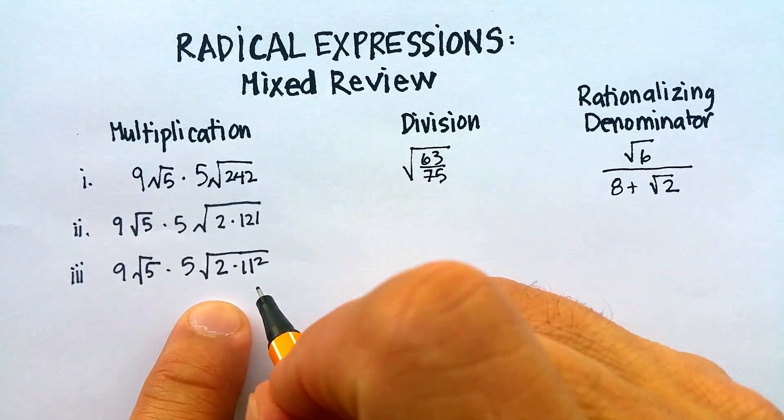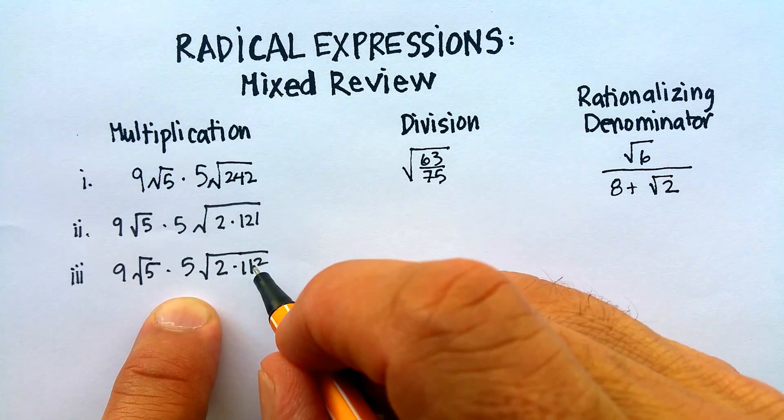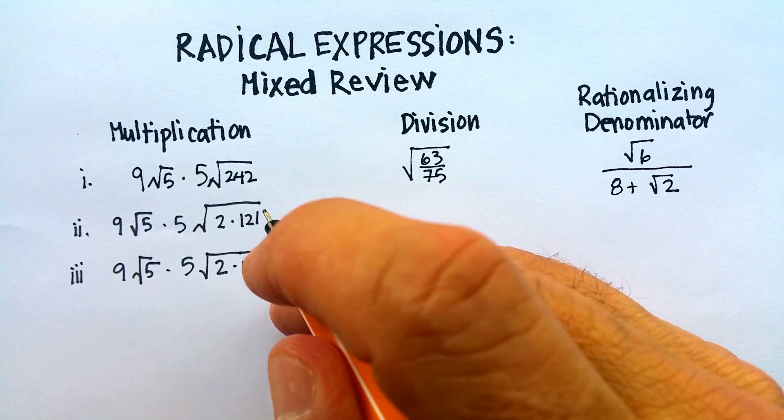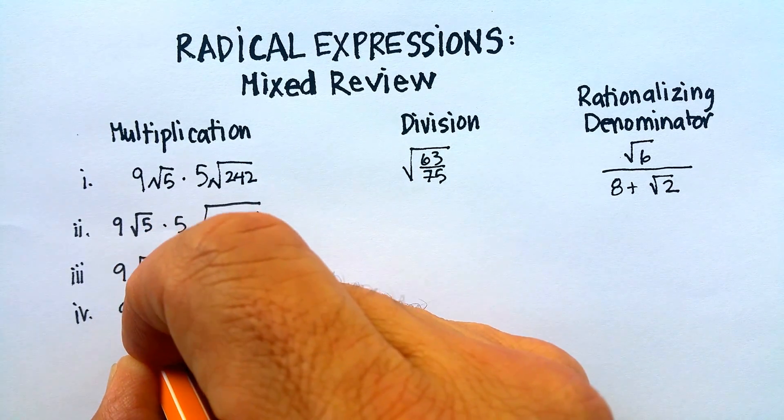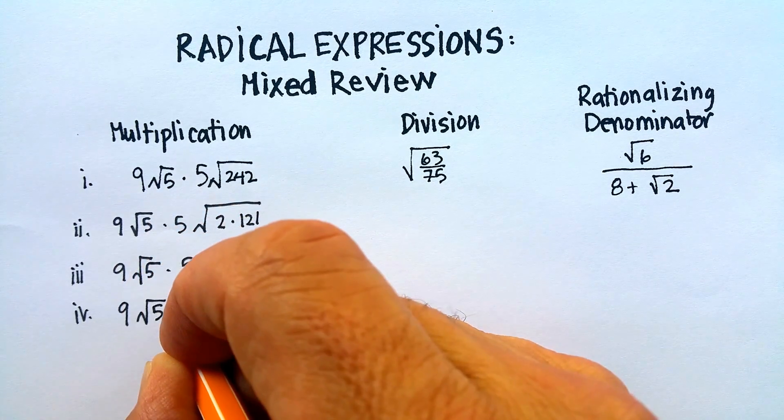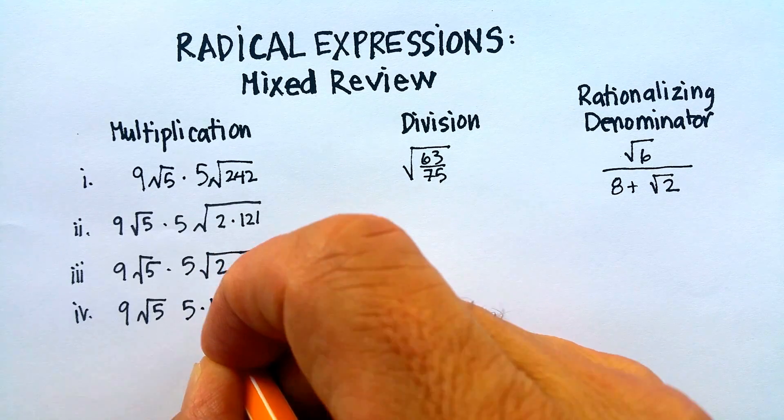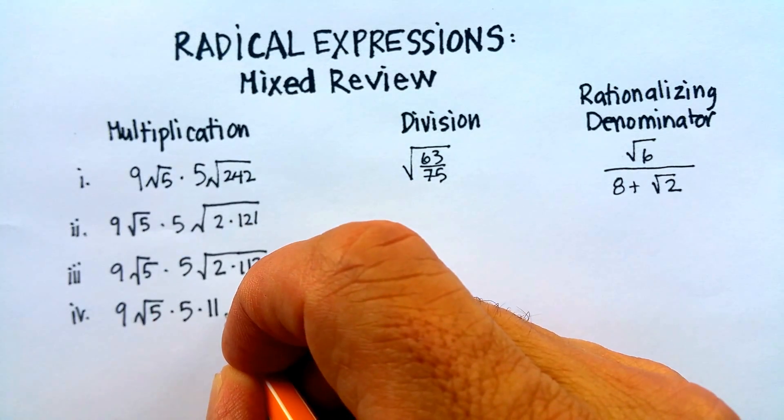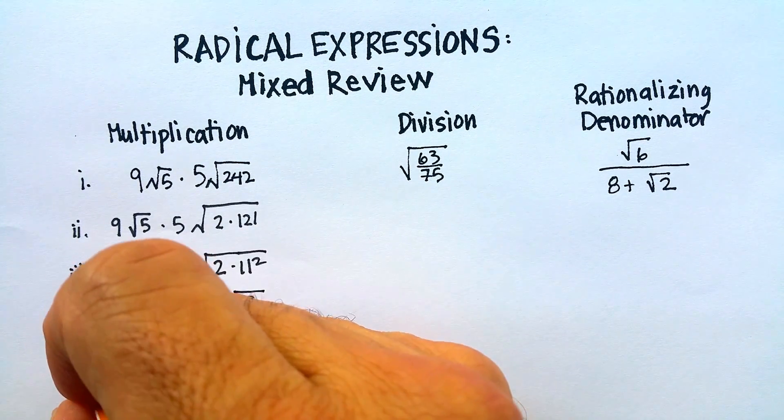Now, the reason that's important is because the square root of 11 squared is 11. So that means now I can take the 11 and put it on the outside. So let me just do that. So 9 radical 5, and then here I've got 5 times 11 times radical 2.